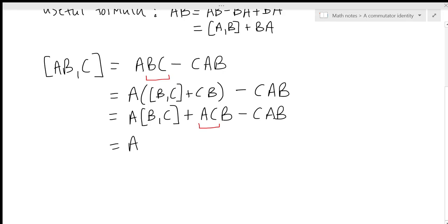So we'll do that here. The first term just comes along for the ride. And then in the second term we'll write AC is equal to [A,C] plus CA all times B, minus CAB.